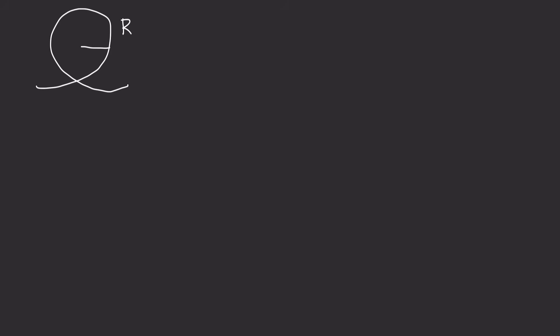Imagine you have a loop-de-loop, which is basically just a circle. The radius of this circle we'll call r, and we're going to say that radius is 2.7 meters. We want to find the least speed v — which is unknown — that a ball would have at the top of the loop in order to remain in contact with the loop at the very top.